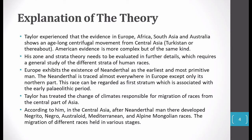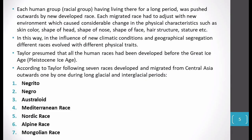Taylor believes that all races evolved in Central Asia. As climate changed in Central Asia, people migrated to another place and developed in different stages. Taylor tells us that each racial group occupied a particular area for a long time, and after that, when a new race developed, the earlier race was forced and pushed outwards by the newly developed race, and they migrated to another area.